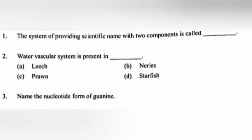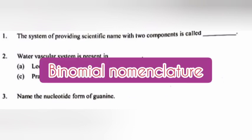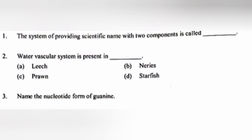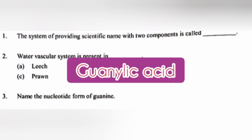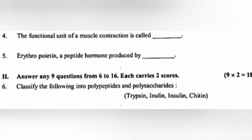1. The system of providing a scientific name with two components is called binomial nomenclature. 2. Water vascular system is present in starfish. 3. Name the nucleotide form of guanine — answer: guanylic acid.